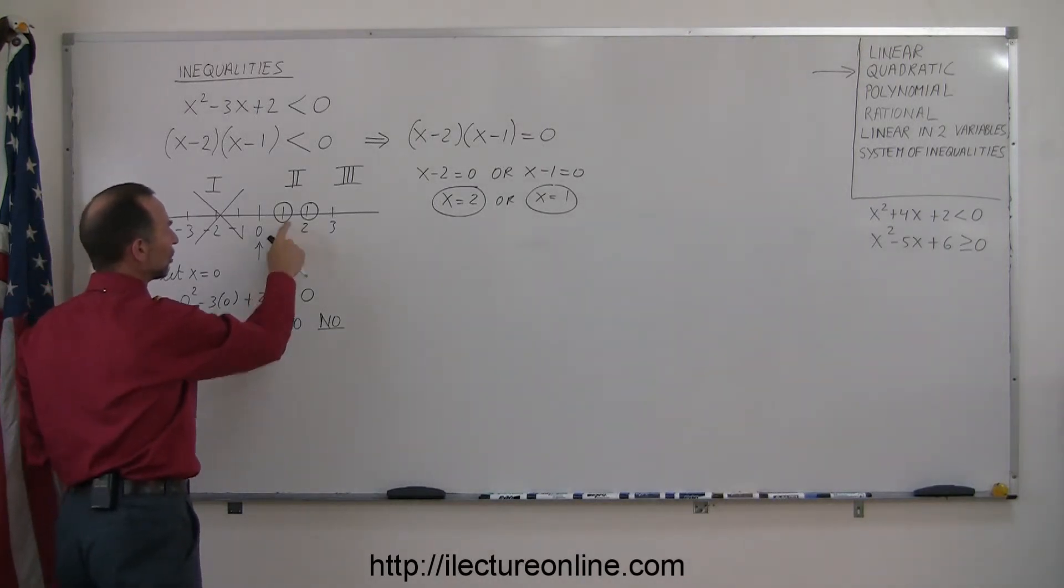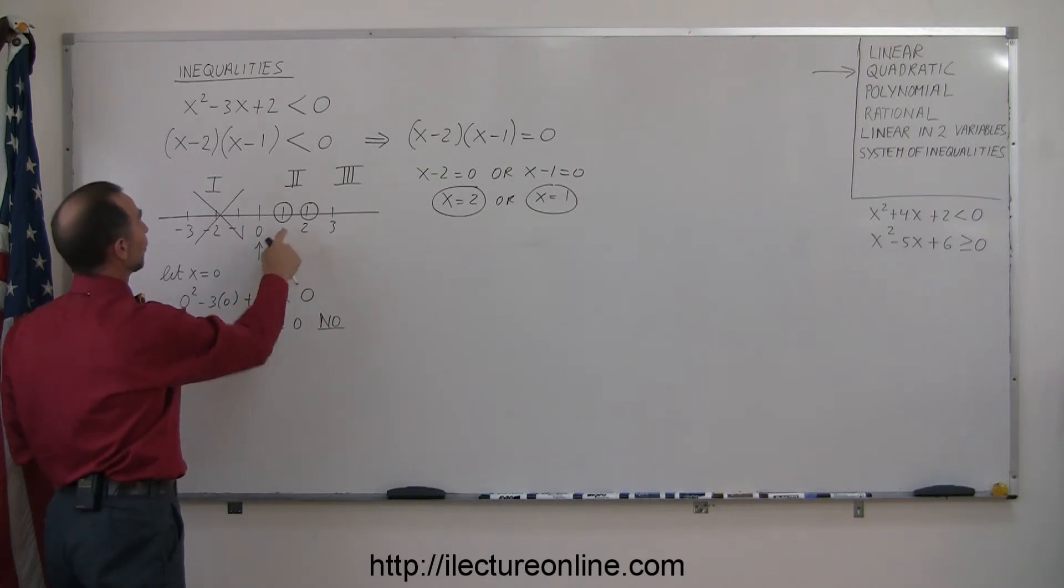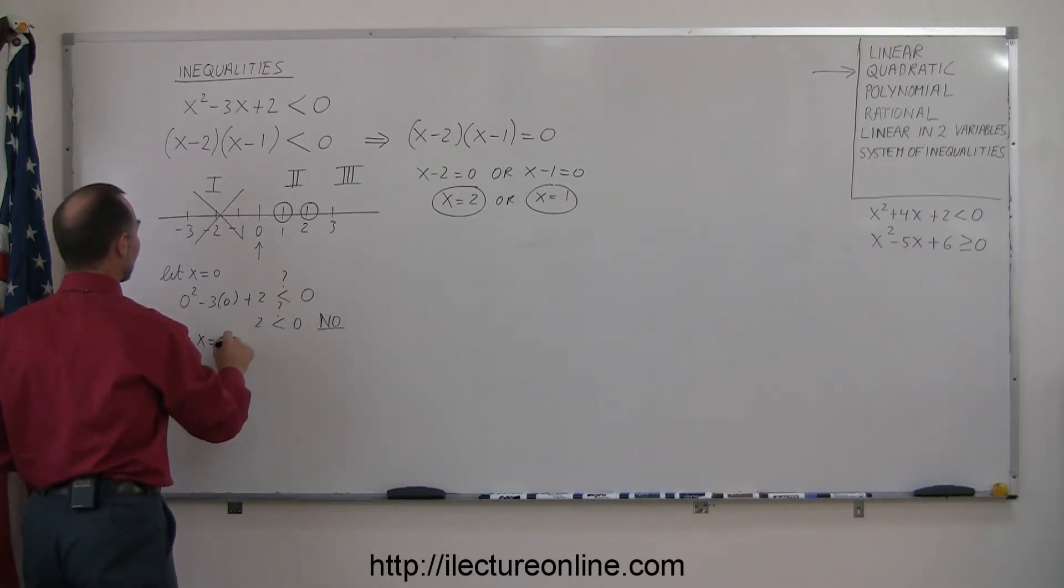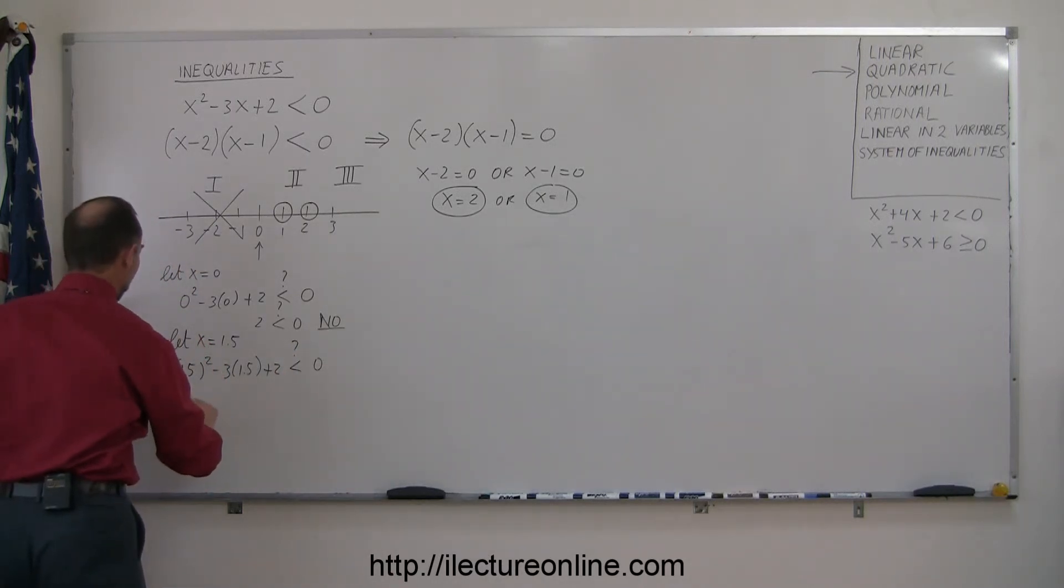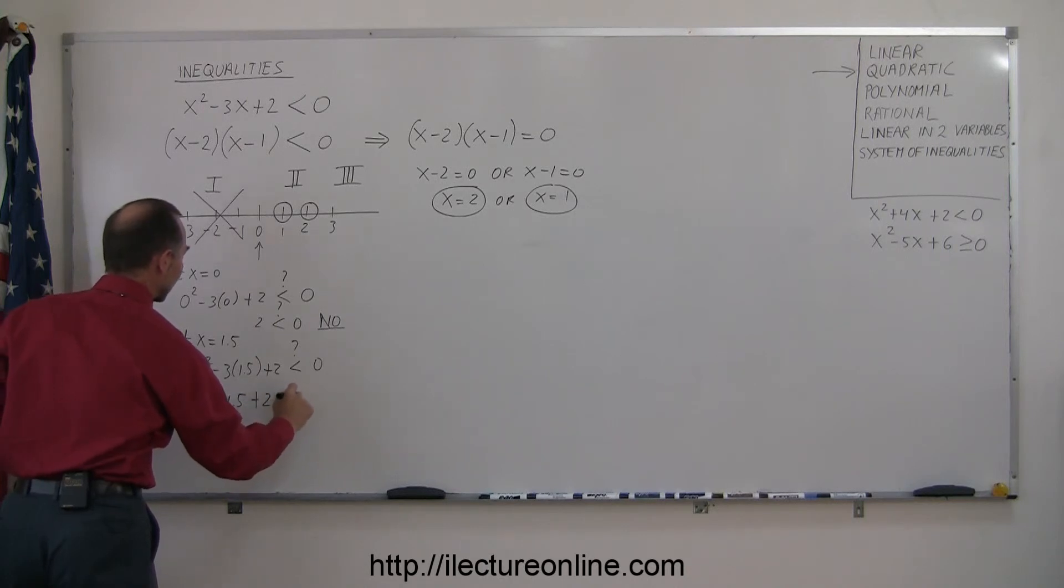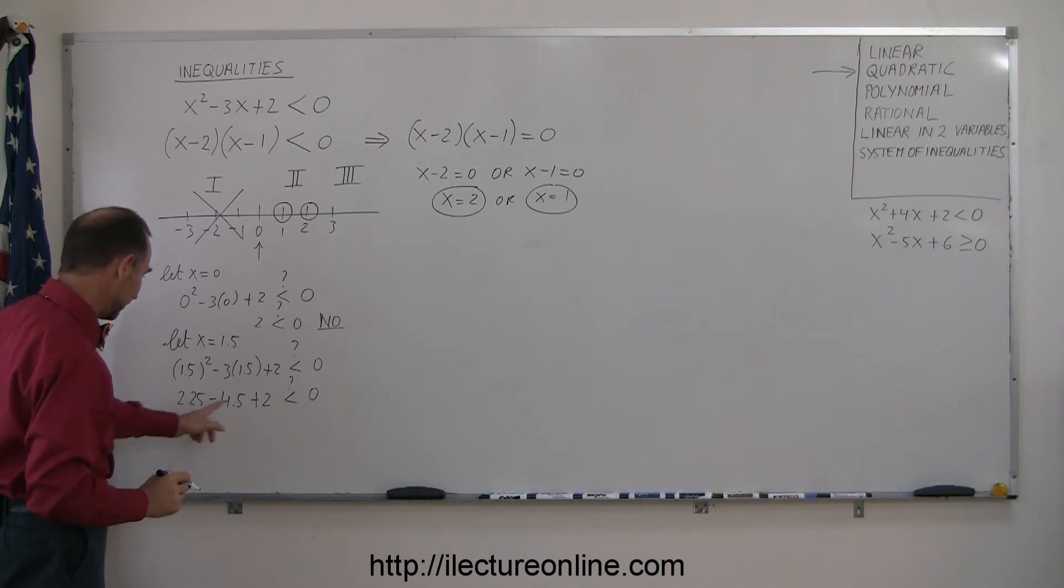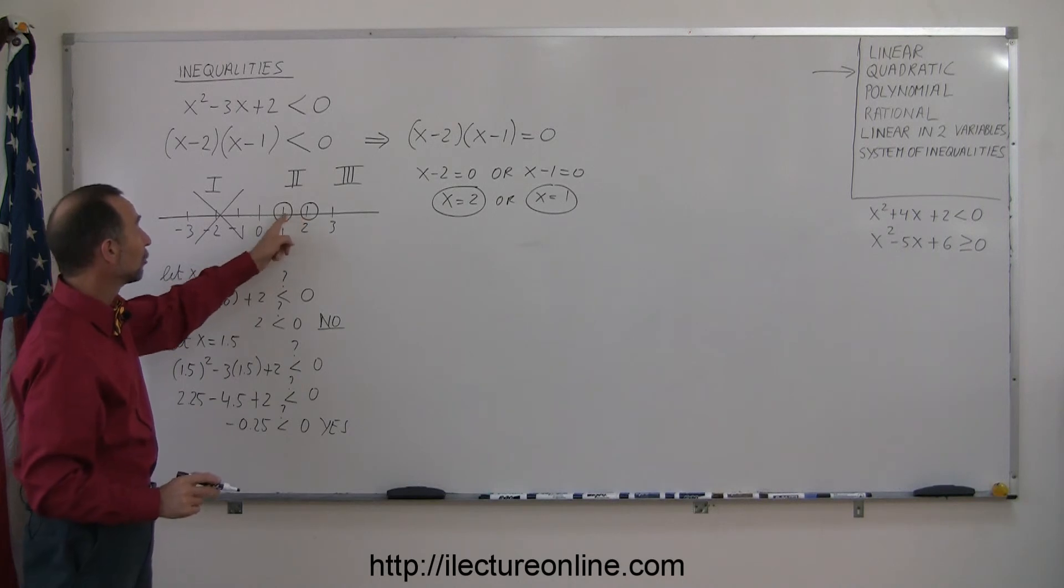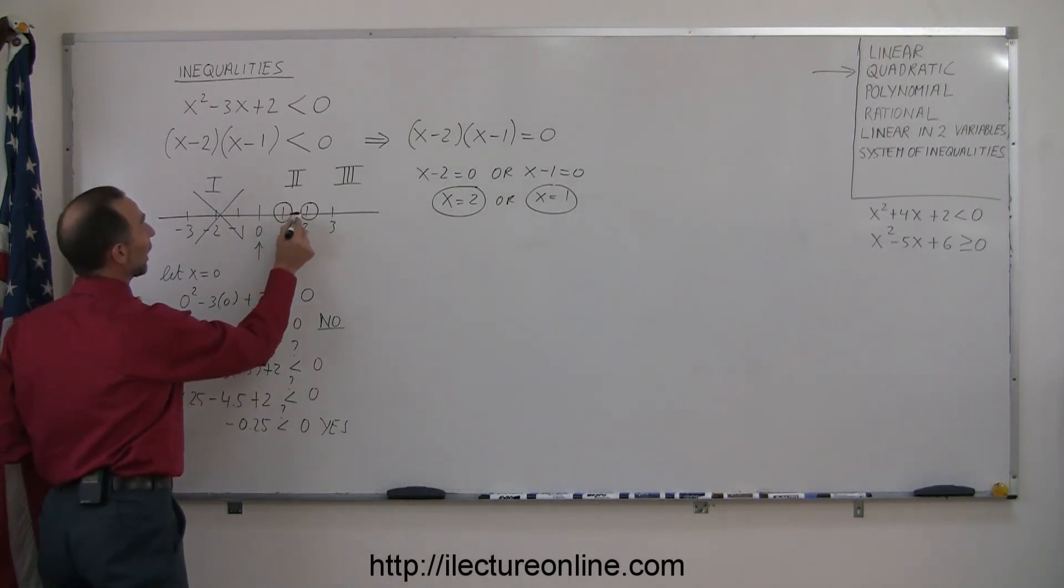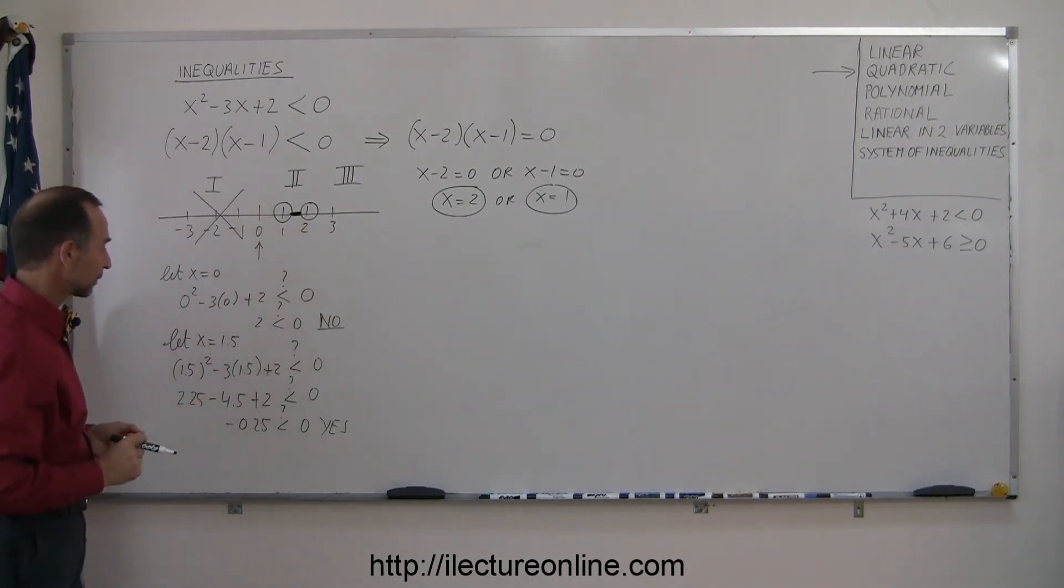I now take a point in the next region. Of course, there's only a few points we can grab here. How about 1 and a half? So we'll try, let x = 1.5, and we plug that into the original inequality. So we have 1.5² - 3(1.5) + 2, and the question is, is that less than 0? Well, 1.5² is 2.25 minus 3 times that, which is minus 4.5 plus 2, is that less than 0? And if we add all that up, we get minus 0.25 < 0, and the answer is yes. So here we found that when we picked a point in region 2, we found that that is actually part of the solution. So we can go ahead and indicate that by making that a little bit more solid.